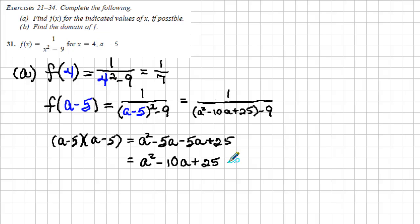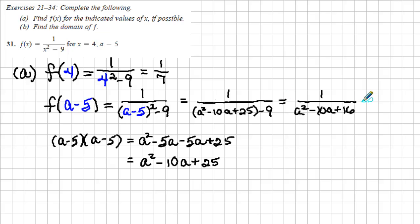Substituting a squared minus 10a plus 25 for the square of a minus 5 gives us 1 over a squared minus 10a plus 25 minus 9. We can combine the two constant terms: 25 minus 9 is equal to 16. So the end result is 1 over a squared minus 10a plus 16.